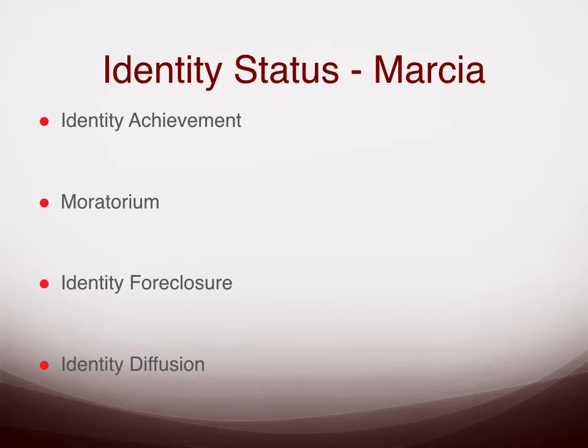The third type is identity foreclosure, which is when the individual has made a commitment to a set of values and goals but without taking the time to explore the alternatives for themselves. These individuals often accept a ready-made identity that an authority figure — usually a parent — has chosen for them. For example, a parent says you are going to be a lawyer, and the individual simply accepts that, takes all the required classes, goes to law school, and becomes a lawyer, never actually exploring the alternatives for themselves.